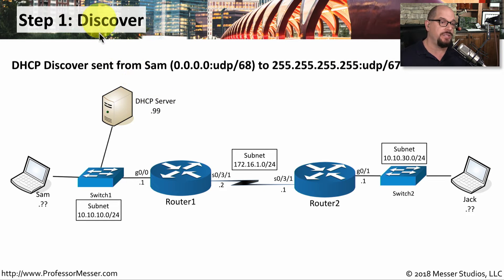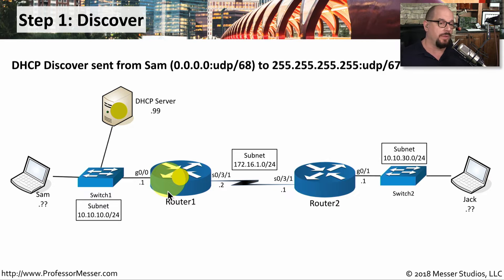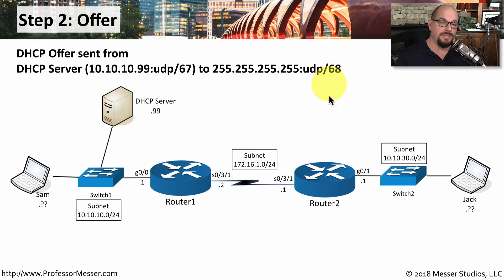That broadcast is going to be a DHCP discover message. As that packet goes out, it will be broadcast to all other devices on the subnet, and this subnet certainly has a DHCP server associated with it. Because this is a broadcast, it goes as far as the router and does not go any further — the router will stop all broadcasts from going through it. But this message did make it to the DHCP server, and the next step is that this DHCP server is going to offer SAM an IP address. SAM doesn't have an IP address yet, so this DHCP server needs to send this offer over an IP broadcast to UDP port 68.